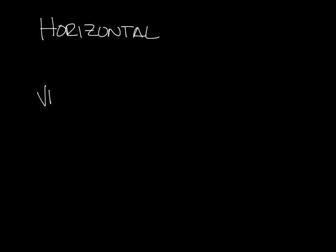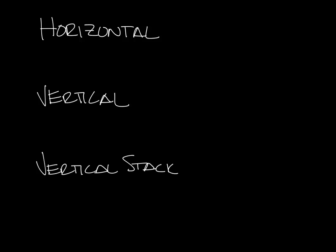We typically break our fan coils into four basic categories: horizontal, vertical, high output, and vertical stack. High output units are actually either horizontal or vertical — they just have higher capacity — so I'm just going to cover horizontal, vertical, and vertical stack.